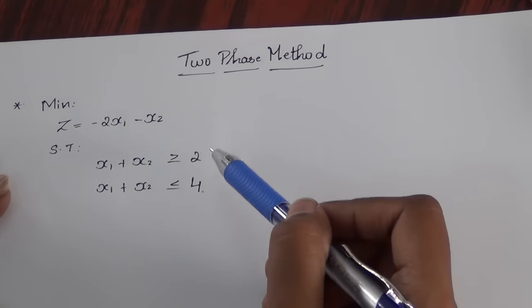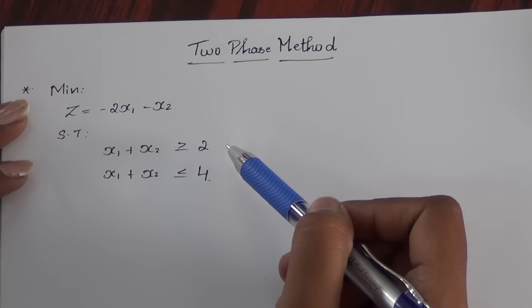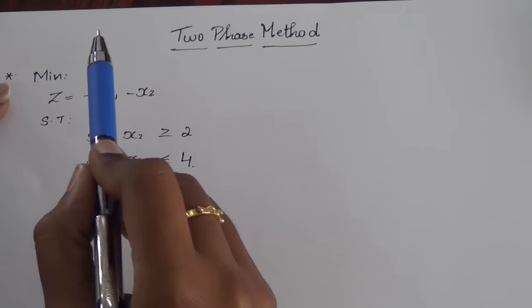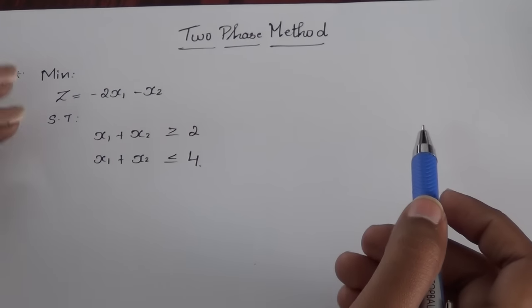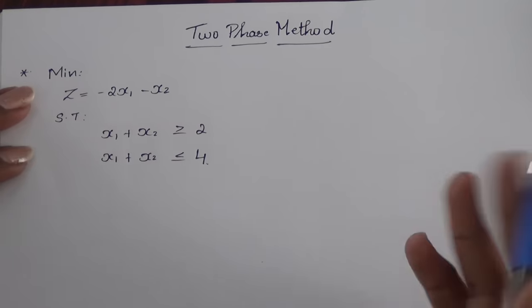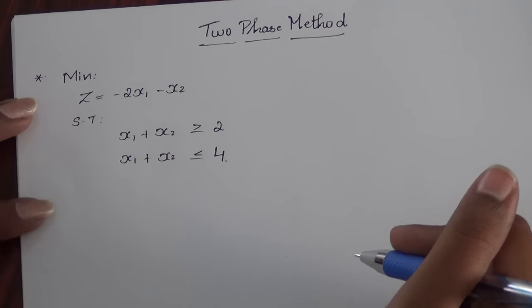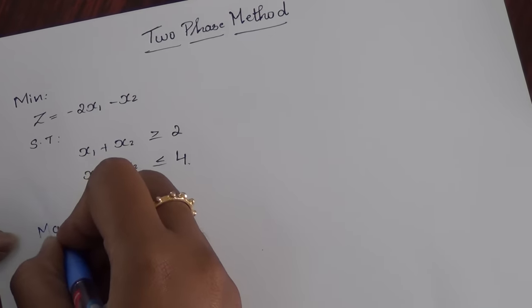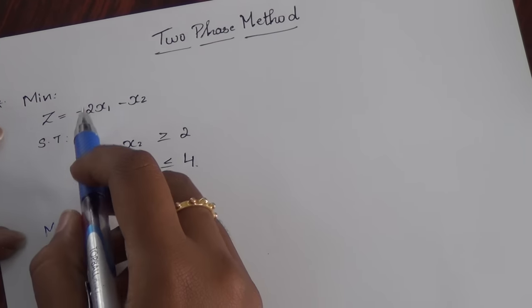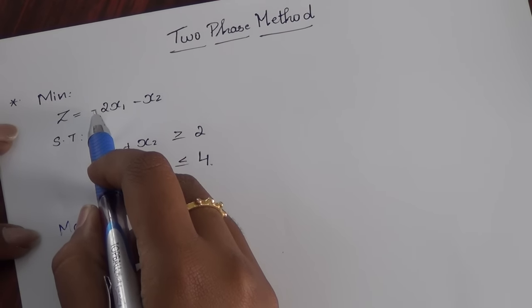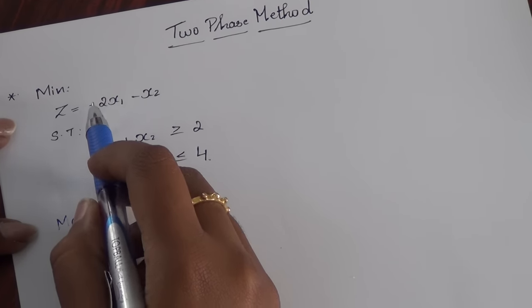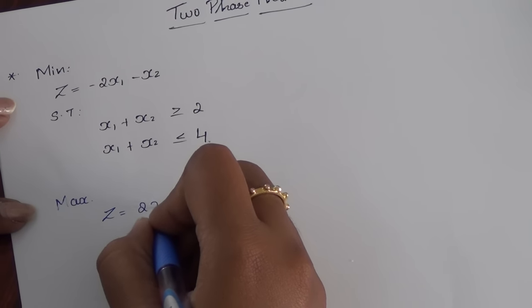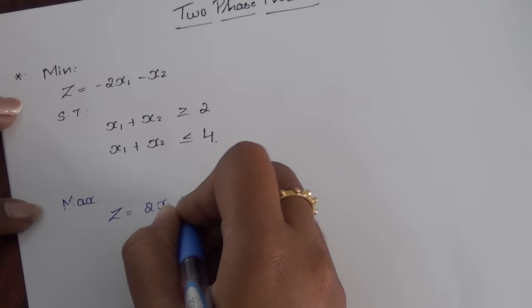To solve the problem in two phases, we have to convert the problem into a maximization problem — the objective function should be of maximization. Since the given question is of minimization, we convert it to a maximization problem by converting the symbols; for example, if it is minus, we convert it to plus. So this will be: z equals 2x1 plus x2.